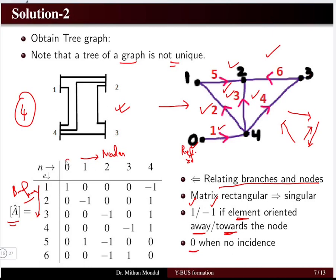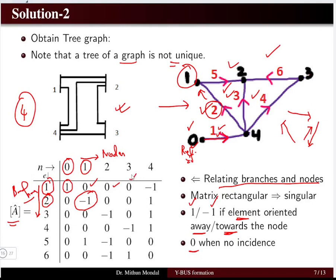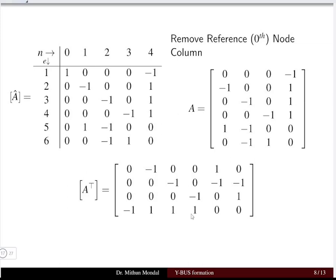For example, node 0 and branch 1: branch 1 goes away from node 0, so we assign +1. For node 1 and branch 2: branch 2 goes into node 1, so we assign −1. All other entries with no incidence are 0. The matrix A-hat is rectangular, hence it is a singular matrix. In the next step, we remove the reference node column from A-hat to obtain matrix A, which contains only the non-reference nodes 1 through 4.